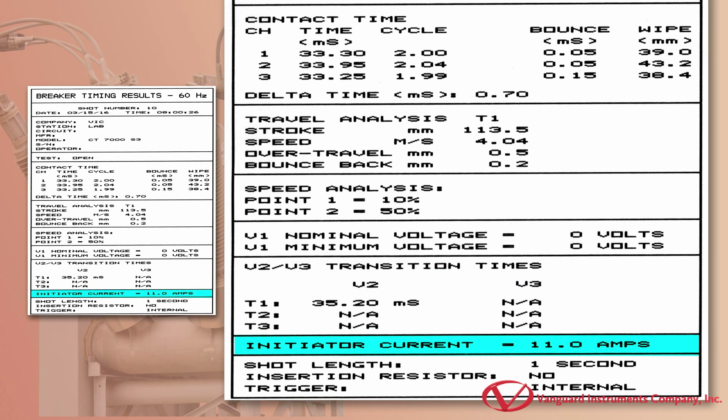The measured open coil current is shown here. For this example, the initiate current was 11 amps.